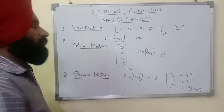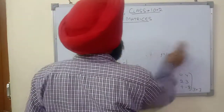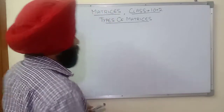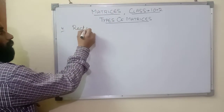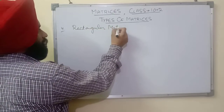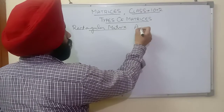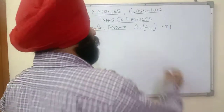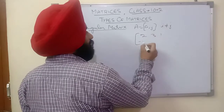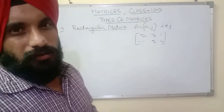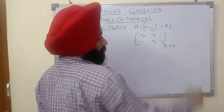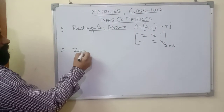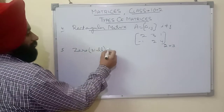Next is the rectangular matrix. A rectangular matrix is one in which the number of rows and columns are not equal. If A = [a_ij] is a rectangular matrix, then i will not be equal to j. For example: [[2, 3, 1], [-1, 2, 4]] — this is a rectangular matrix with 2 rows and 3 columns.